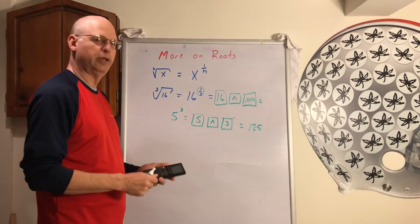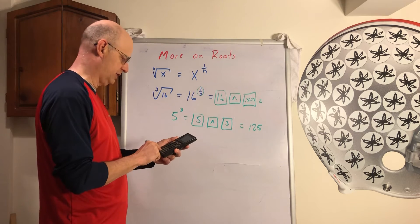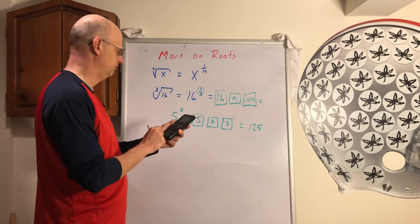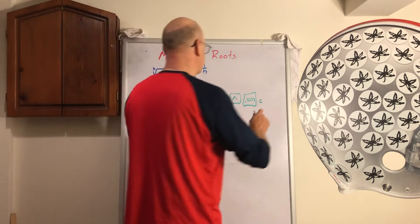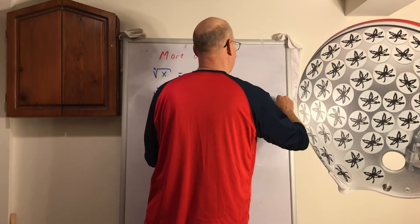And you take it out even more places than that on your calculator. So I got 16 little up caret thing, 0.33333 and I get approximately 2.51.